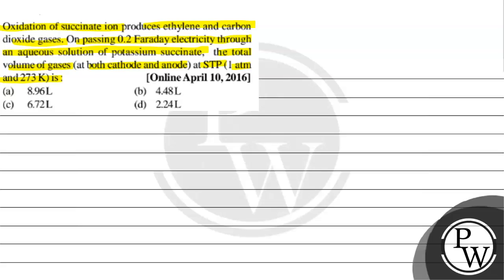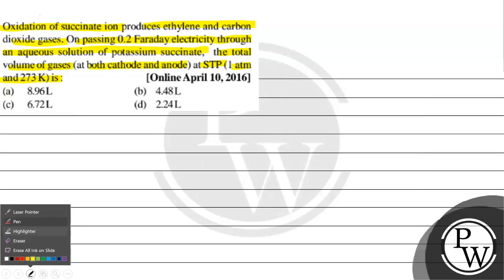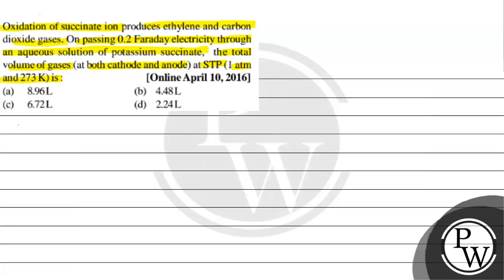Option A: 0.96 litre, Option B: 4.48 litre, Option C: 6.72 litre, Option D: 2.24 litre.